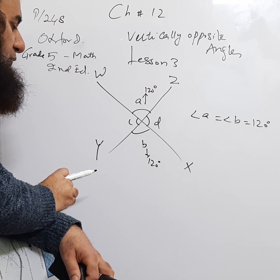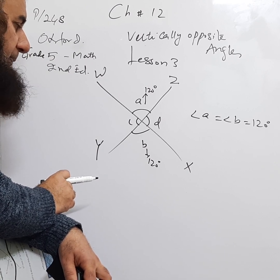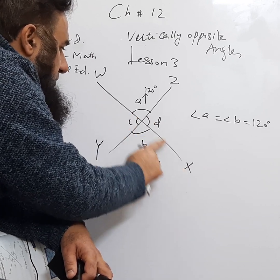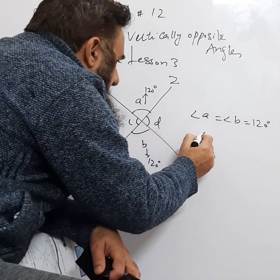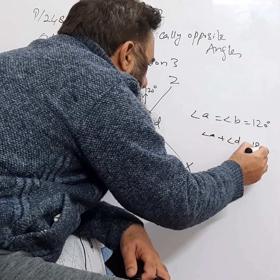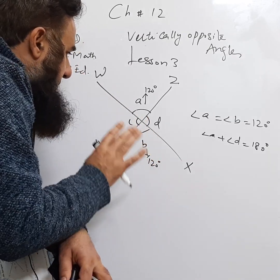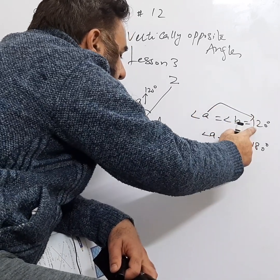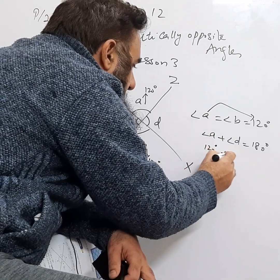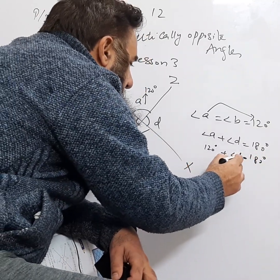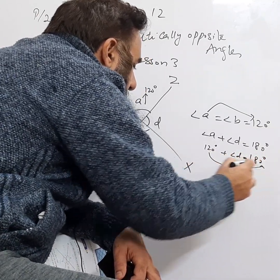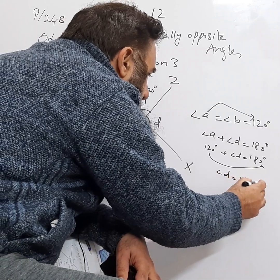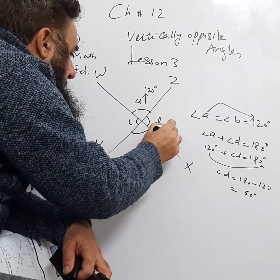Now, if we need to find angle D: WX is a straight line, and angles A and D are on this straight line, so their sum is 180°. Therefore, angle A plus angle D equals 180°. We know angle A is 120°, so: 120° plus angle D equals 180°. Transferring 120° to the other side, angle D equals 180° minus 120°, which gives angle D equals 60°.